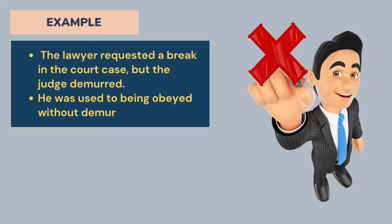The examples are: 'The lawyer requested a break in the court case, but the judge demurred' — the judge protested that the court case should continue. And: 'He was used to being obeyed without demur,' meaning nobody could denounce whatever he says.